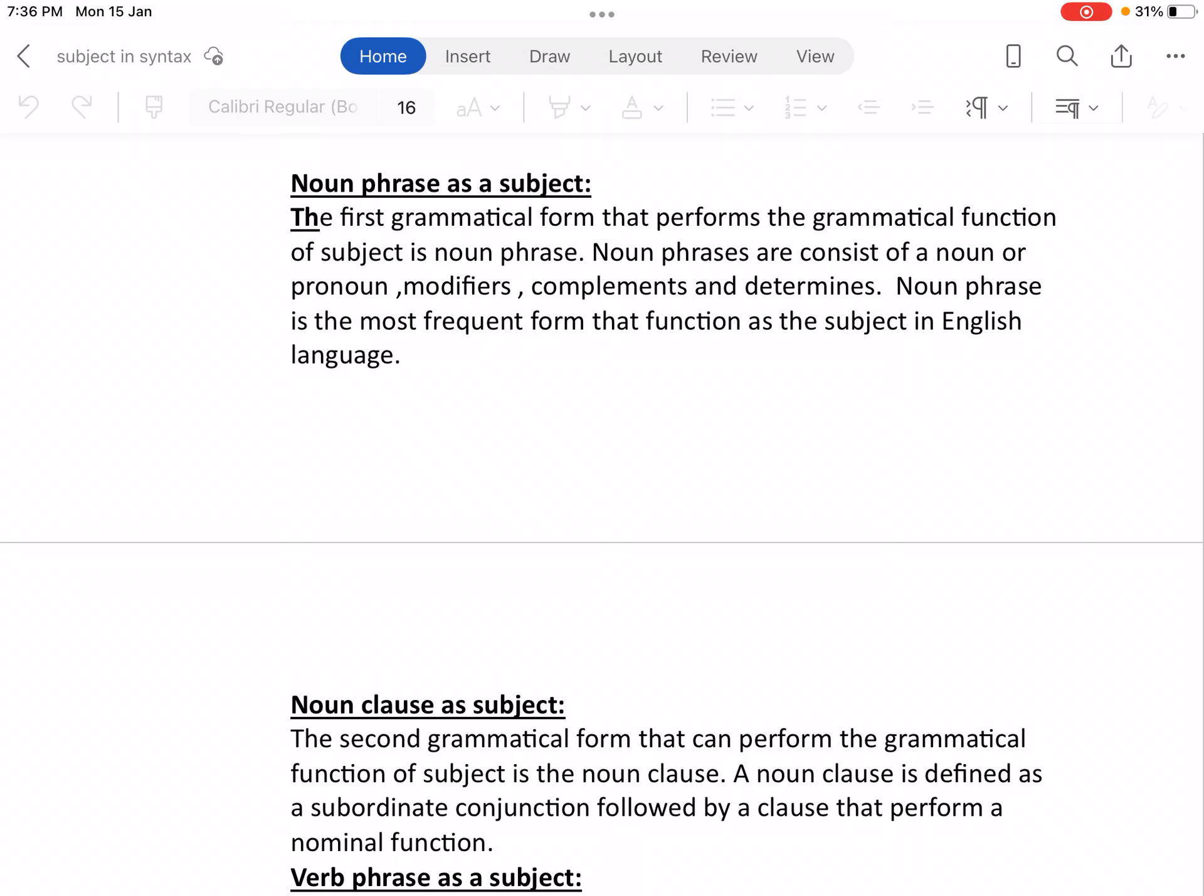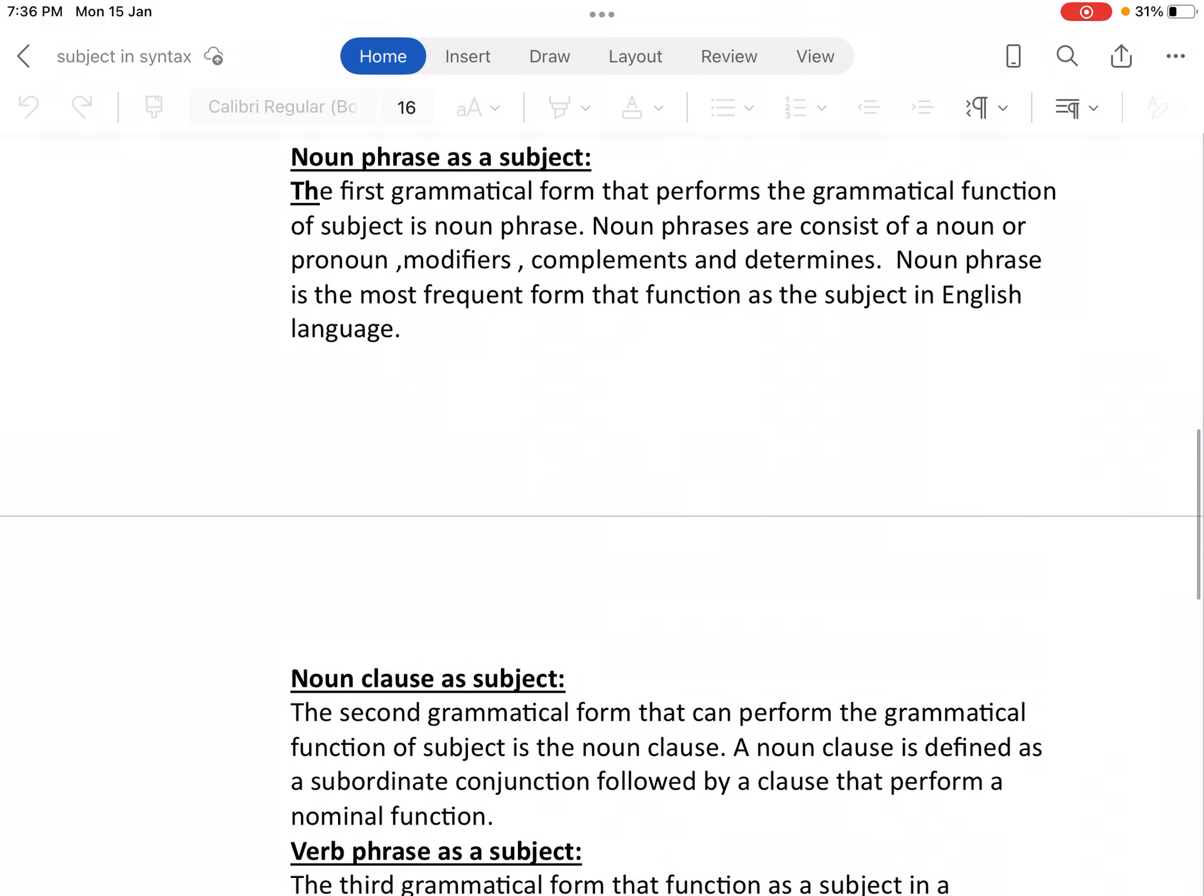The noun phrase is the most frequent form that functions as a subject in English language. It is the form, noun phrase, that works as a subject. The noun is the word class and noun phrase that is always used as a subject in English language.